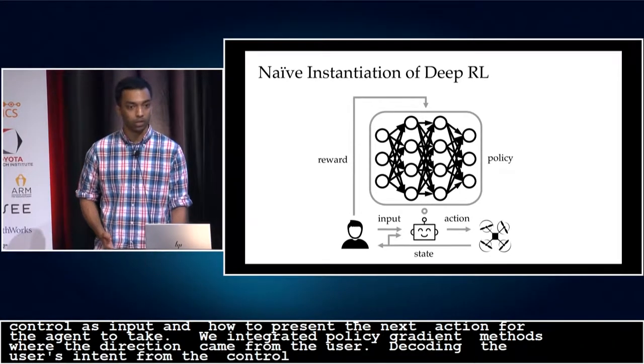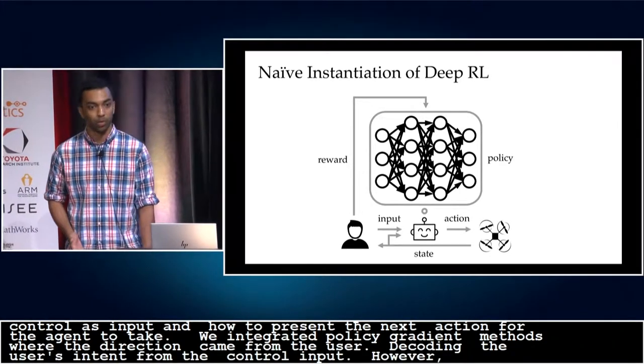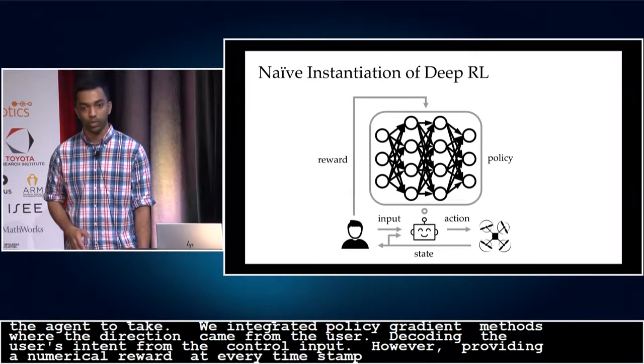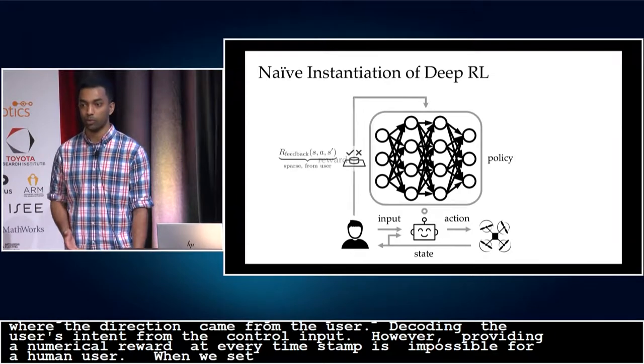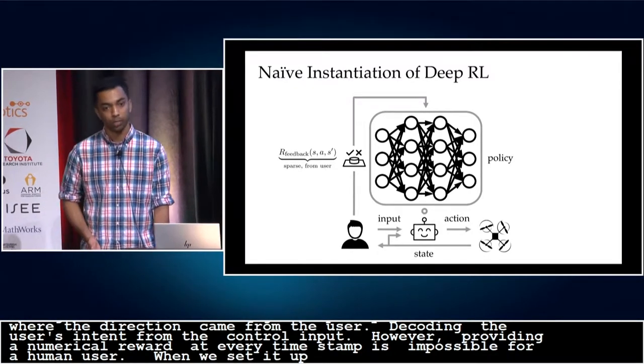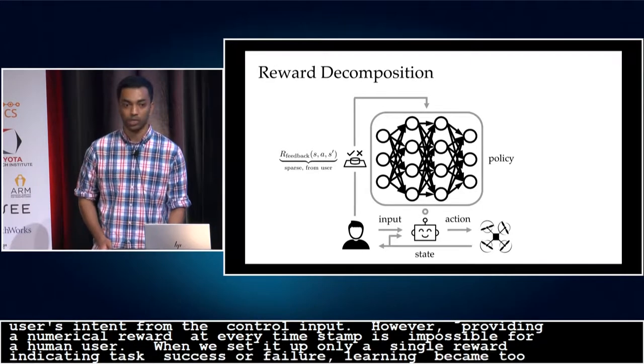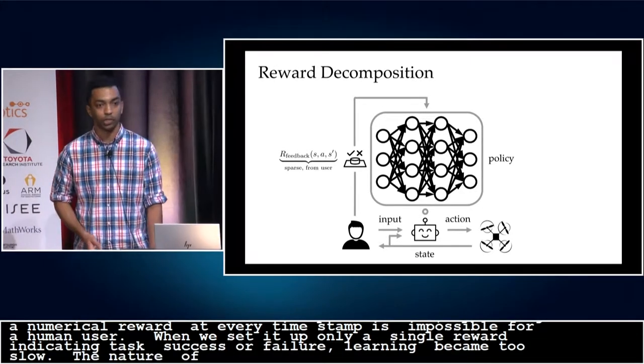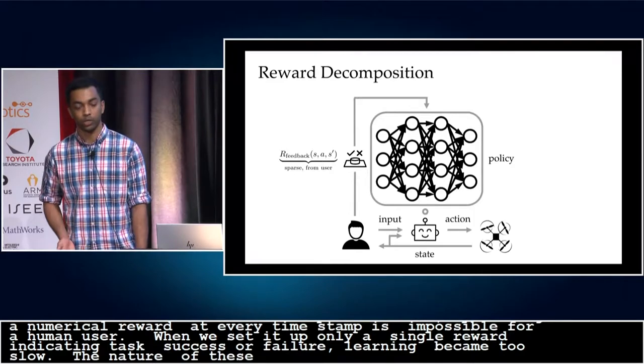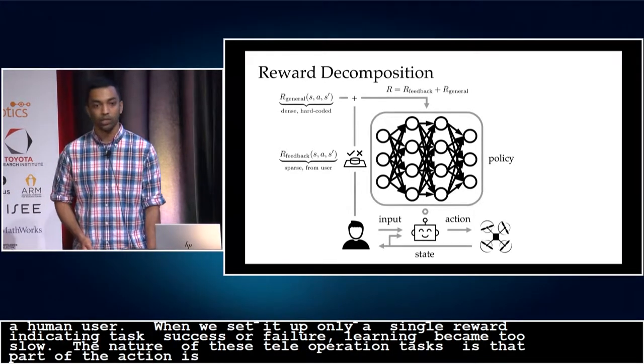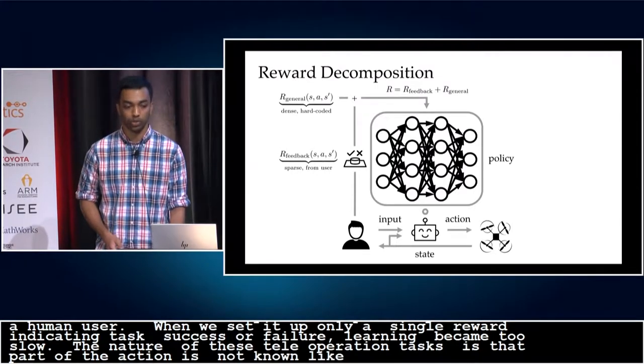In theory, this enabled the agent to implicitly decode the user's intent from their control input. However, providing a numerical reward at every single time step is impossible for a human user. And when we simplified the setup to have the user only supply a single reward at the end of each episode to indicate task success or failure, learning became too slow. But the nature of these teleoperation tasks is such that part of the reward is actually known, things like not crashing. So we can pre-train with this dense reward and later fine-tune on sparse feedback from the user to personalize the assistance model.